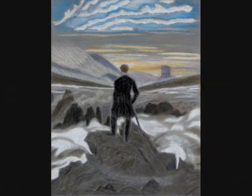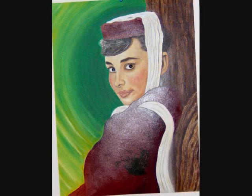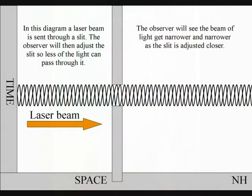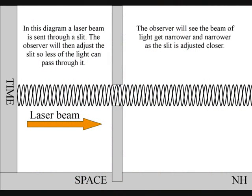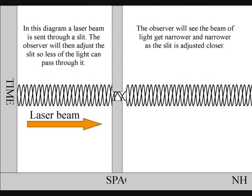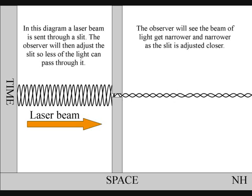This can explain what the observer actually sees. In this diagram, a laser beam is sent through a slit. The observer will then adjust the slit, so less of the light can pass through it. The observer will see the beam get narrower and narrower, as the slit is adjusted closer.